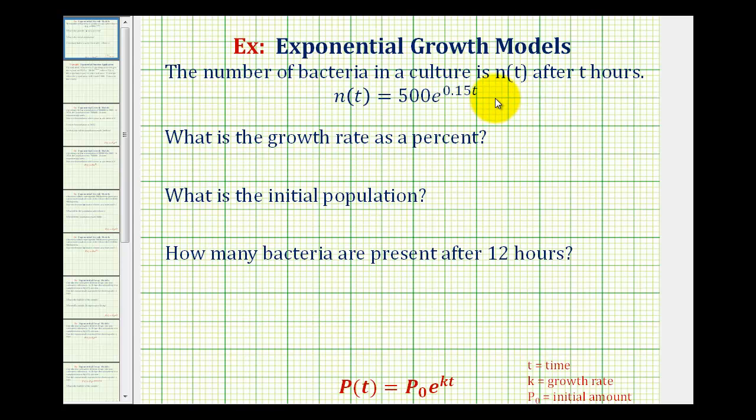The number of bacteria in a culture is n of t after t hours. So the function that models the number of bacteria, or the bacteria population, is n of t equals 500 times e raised to the power of 0.15t.